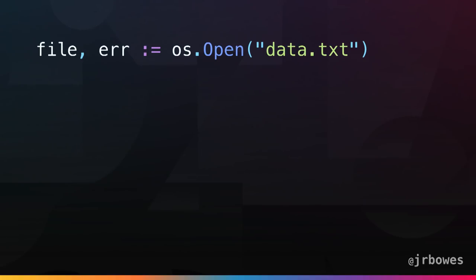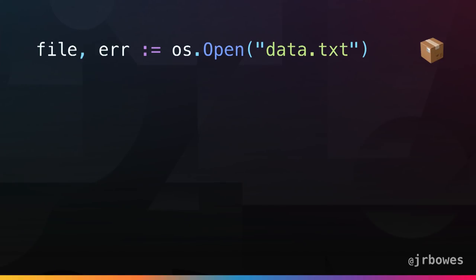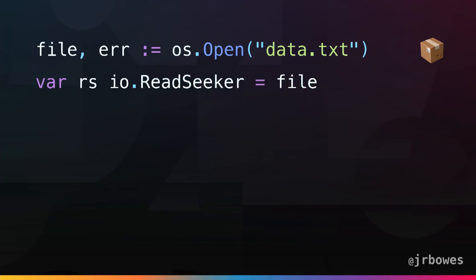To look at the type system: if we call os.Open we get a pointer to an os.File, and we can assign that to a variable called file. The compiler can check this for us at compile time — we know that file is a pointer to an os.File. If we then assign file to an interface type like io.ReadSeeker, that too can be done at compile time, because the compiler knows that os.File has the required methods.